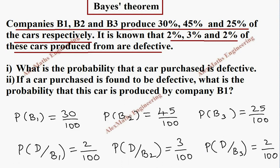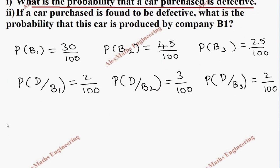Now in the question they are asking, what is the probability that the car purchased is defective? So they want the probability of defective, represented as P of D. It can be from B1, B2 or B3. So the logic for the expression is, it is from company B1 and getting a defective from B1.